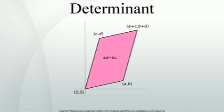The determinant has many properties. Some basic properties include: the determinant of the n×n identity matrix is 1; for square matrices A and B of equal size, det(AB) = det(A)·det(B); and for an n×n matrix, det(Aᵀ) = det(A). If A is a triangular matrix, then its determinant equals the product of the diagonal entries. This can be deduced from the Leibniz formula or from the Laplace expansion, in which the identity permutation is the only one that gives a non-zero contribution.